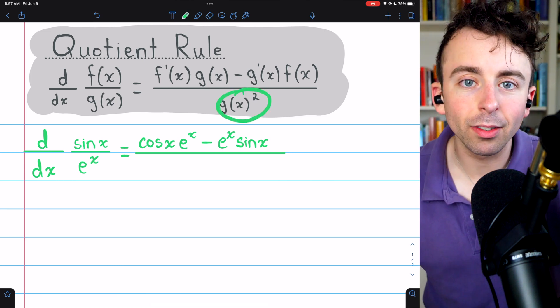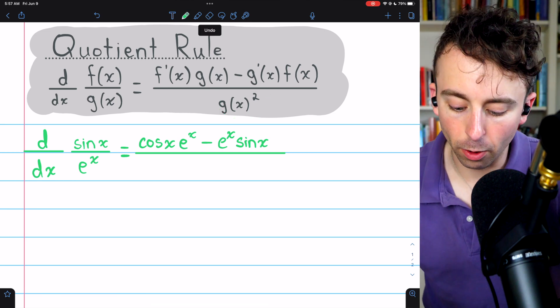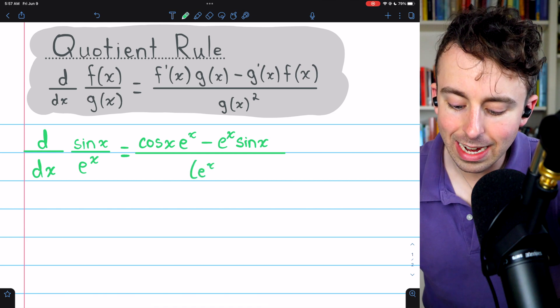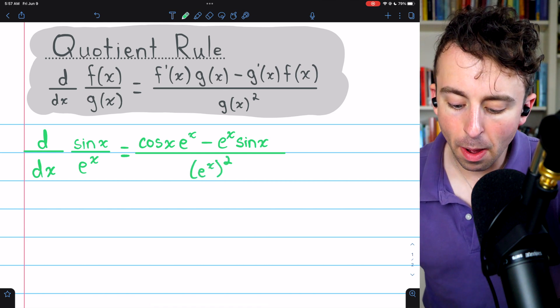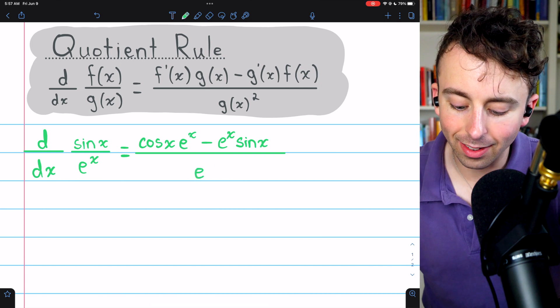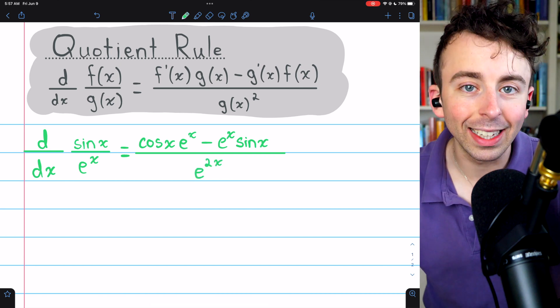Then divide by g of x squared. That's the denominator squared, which is e to the x squared. But by our exponent laws, that's the same as e to the 2x, so let's write it like that.